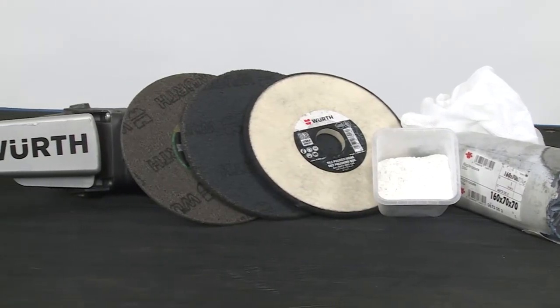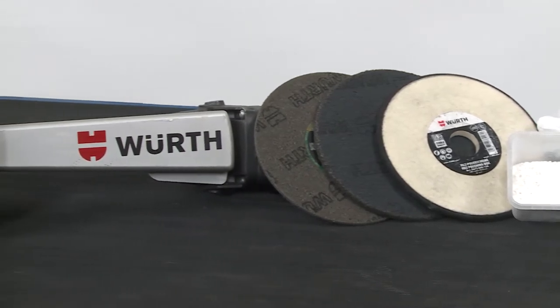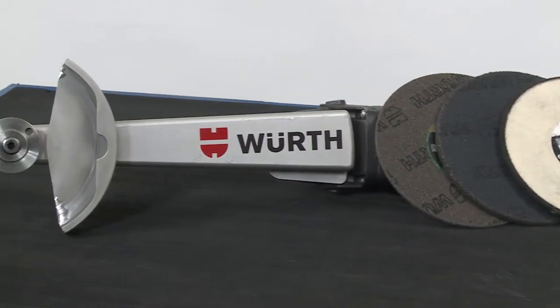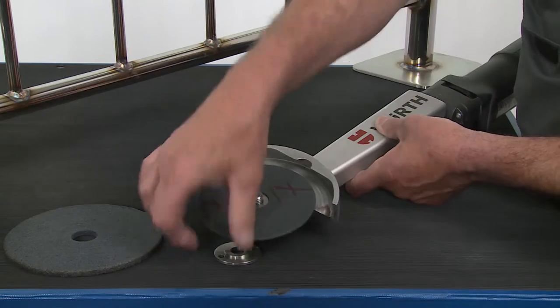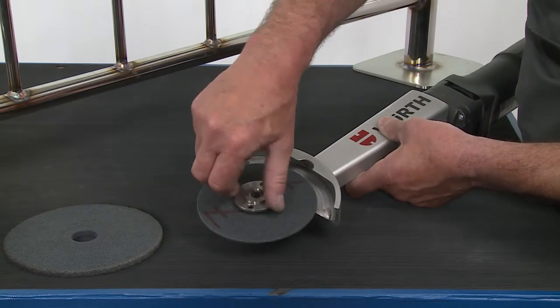If the weld seam needs to be removed completely, use the fillet weld sander again. Begin with the hard pressed fleece disc, hardness grade 7 in 3 mm.